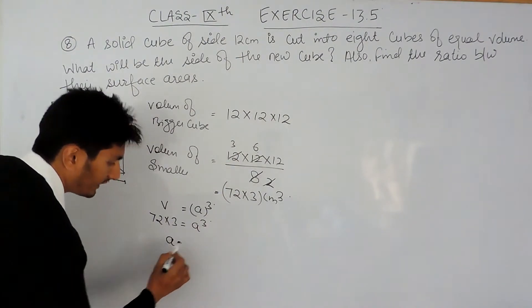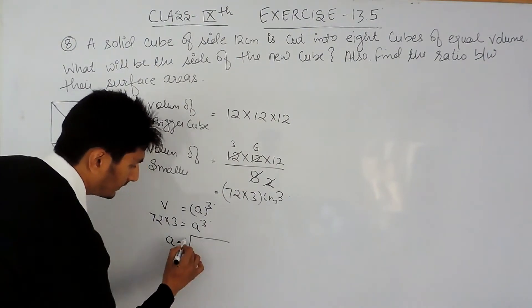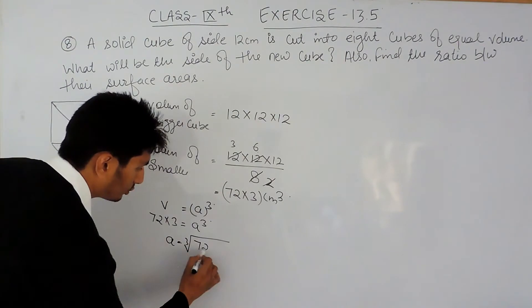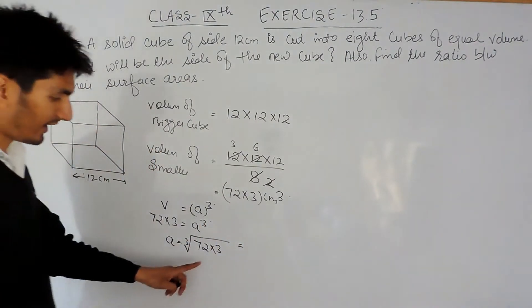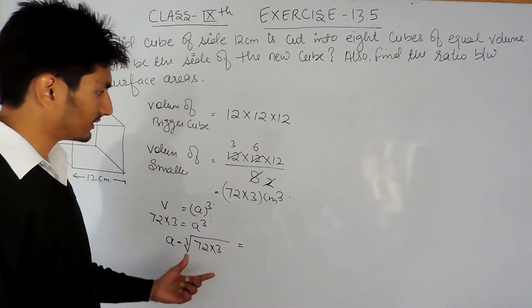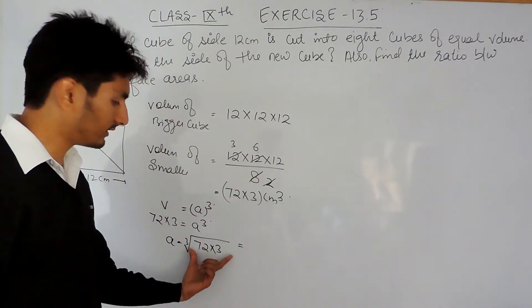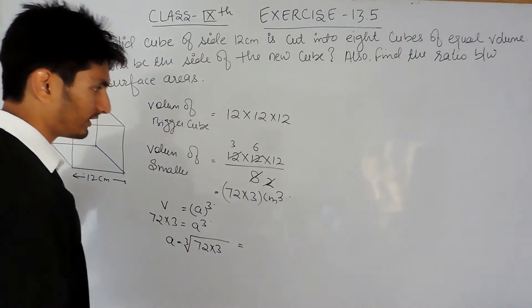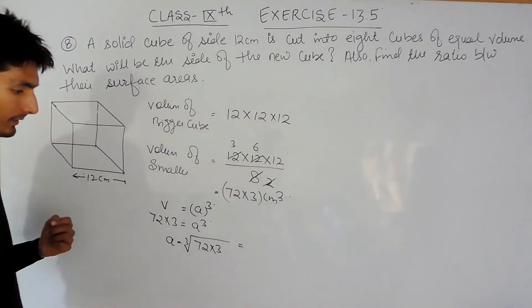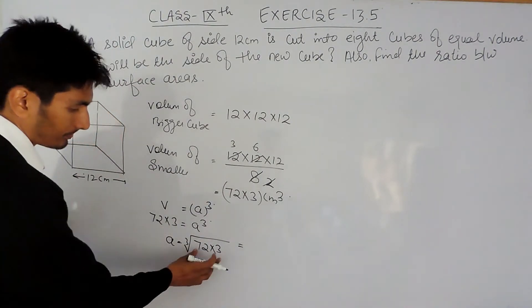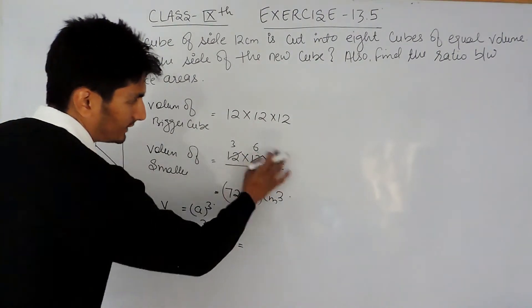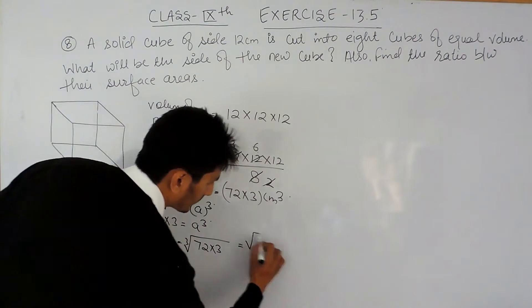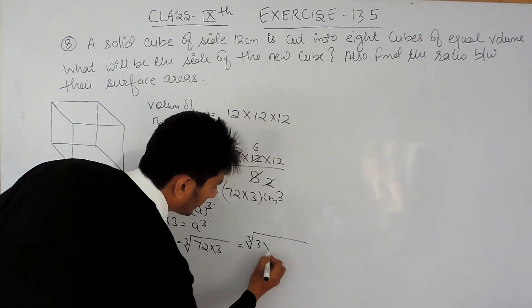And volume is given to me as 72 multiplied by 3, and that is equal to a³. Now if I have to find the value of a, then I have to find the cube root of 72 multiplied by 3. Now I have to factorize this, and I have to make the pair of 3, and I have to take one value out of every pair. So either multiplying these, what I can do, I can split these values right here.